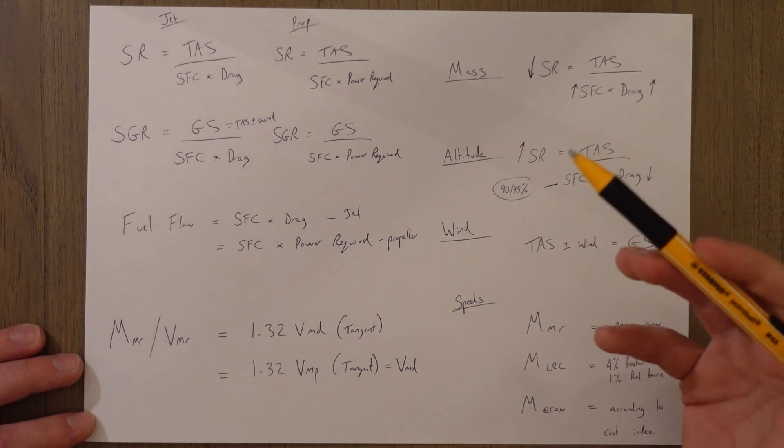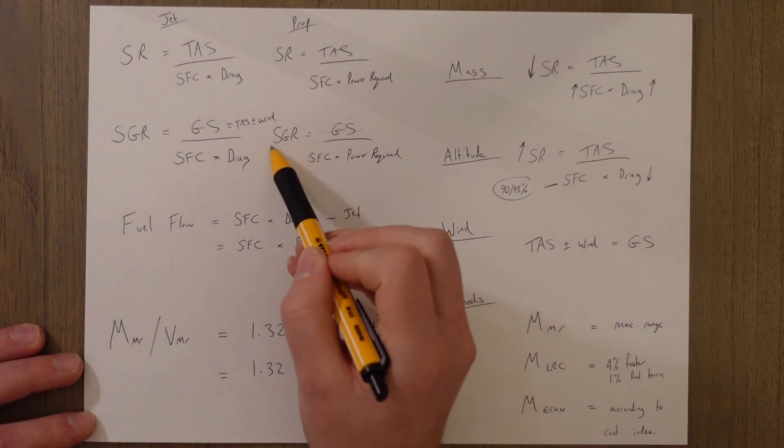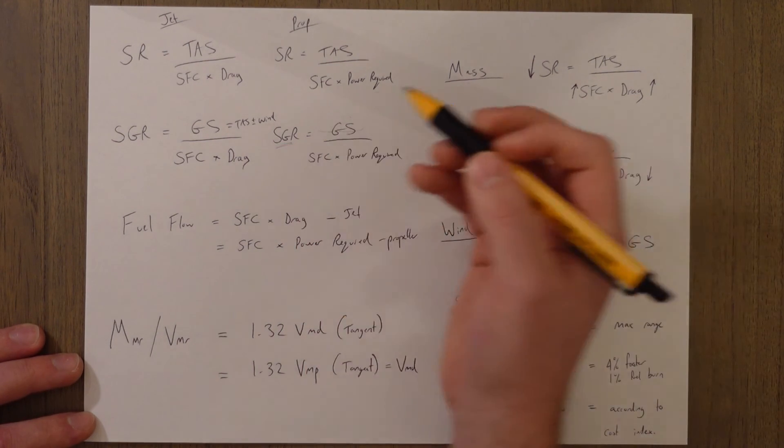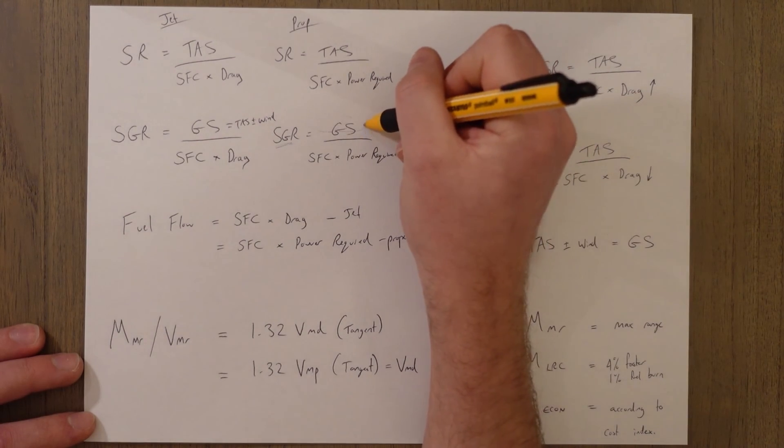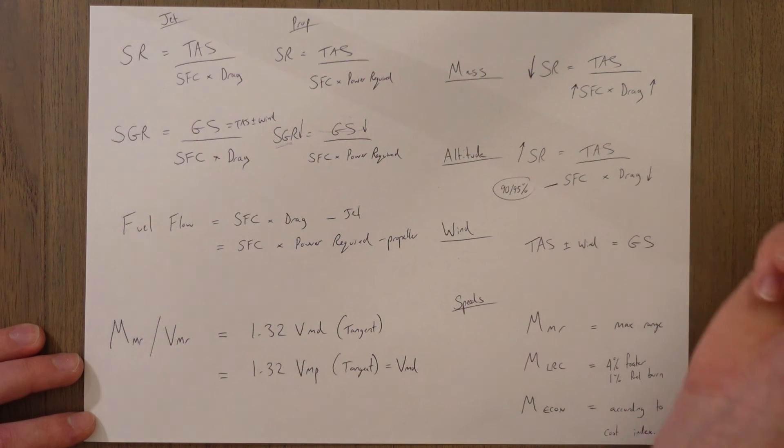Wind has no influence over the specific air range, but it obviously has a huge impact on the specific ground range, because TAS plus or minus wind equals ground speed. If you have a headwind, you would have a lower ground speed, and that would mean a lower specific ground range, for example.